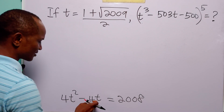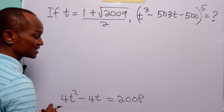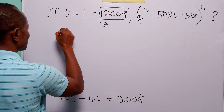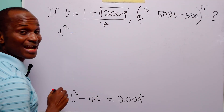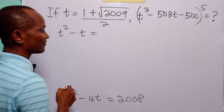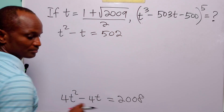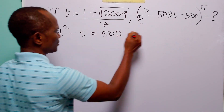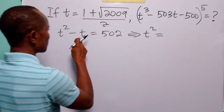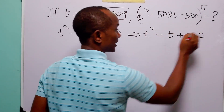Now notice that all these terms are multiples of 4, so we can divide through this equation by 4. 4t² divided by 4 is t². 4t divided by 4 is t. And 2008 divided by 4 is 502. And of course from here, you know that we can write that t² is equal to t + 502.